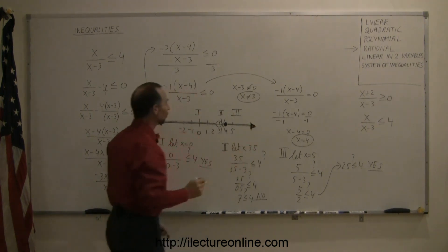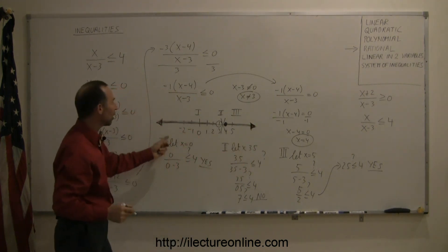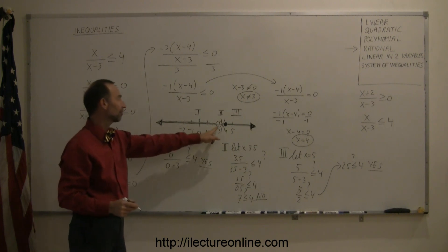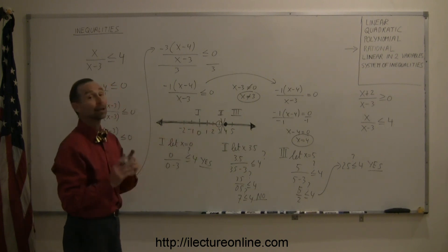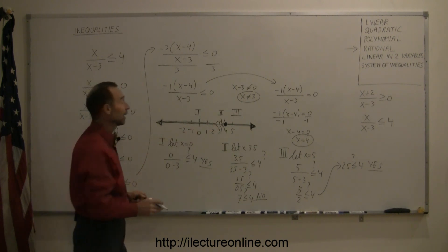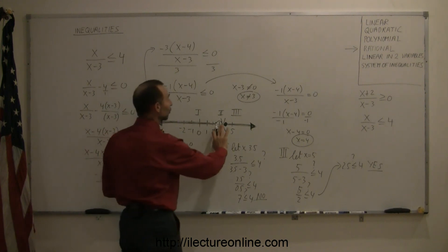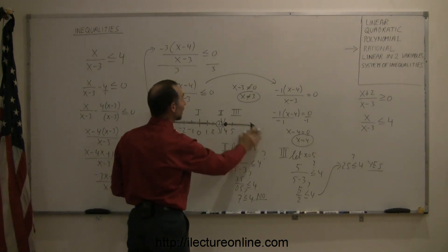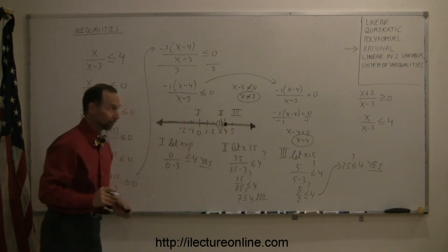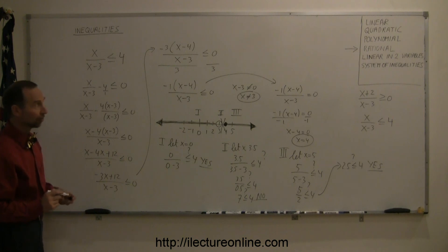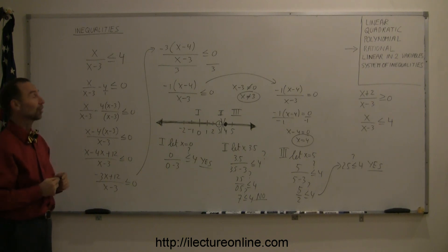So the total solution is all values to the left of 3 — less than 3, not including 3 — and all values to the right of 4, including 4. And that's how you solve these types of rational inequalities.